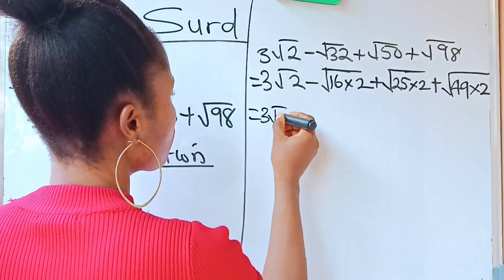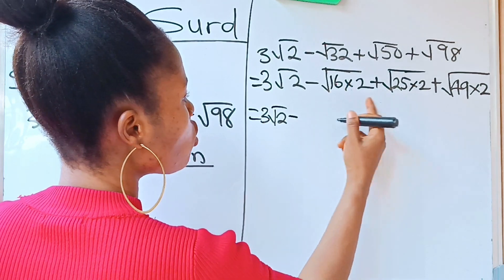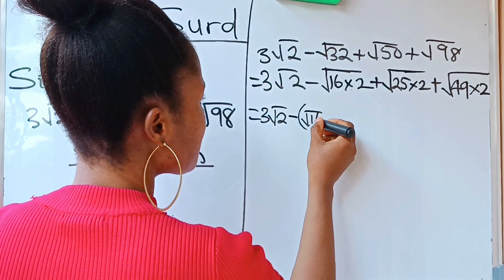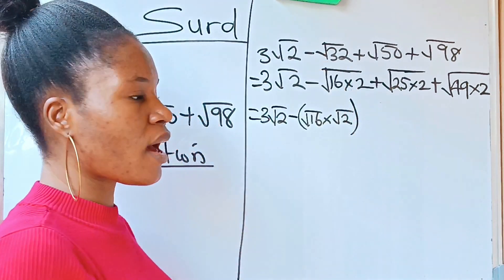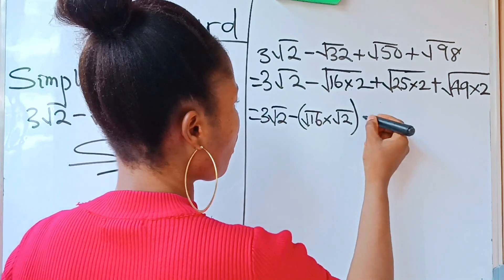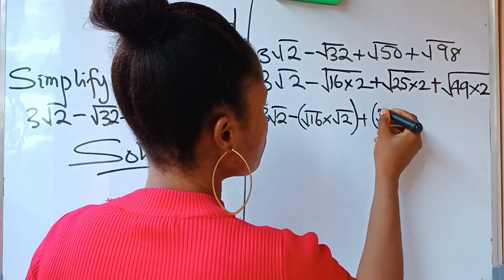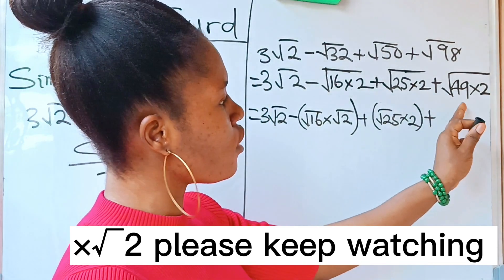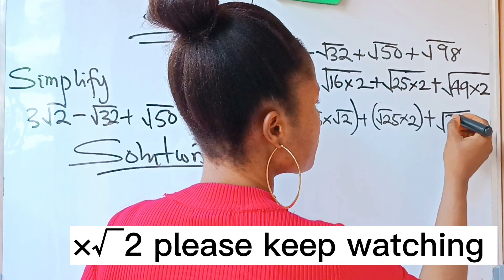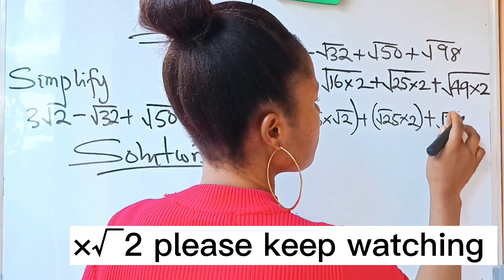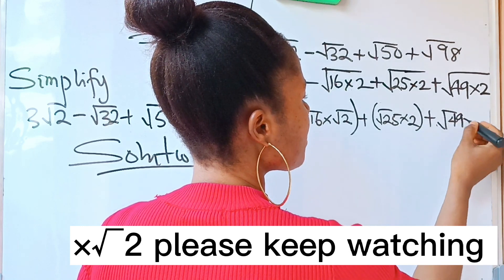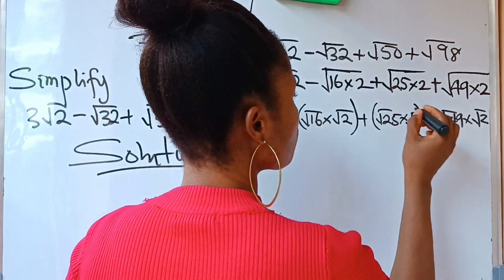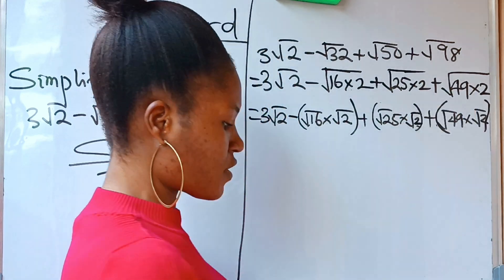Now we rewrite the full expression: 3√2 minus root 16 times root 2, plus root 25 times root 2, plus root 49 times root 2. We split each product into its two separate roots.